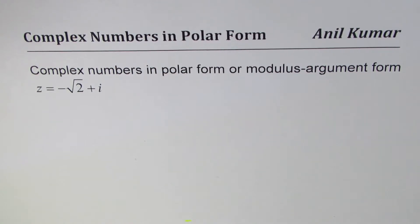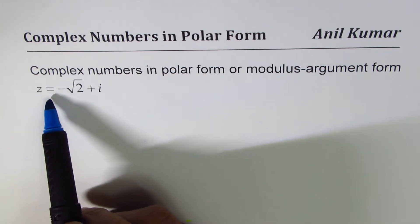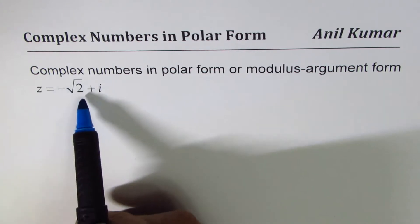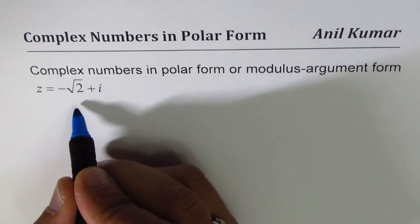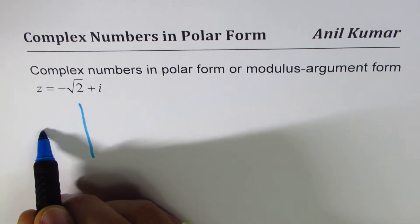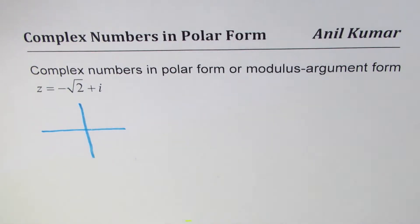The example here is the complex number z is equal to minus square root 2 plus i. Now this happens to be in a certain quadrant — let's look into that first and then we'll do the rest of the part. Most important is actually to figure out how to place it.